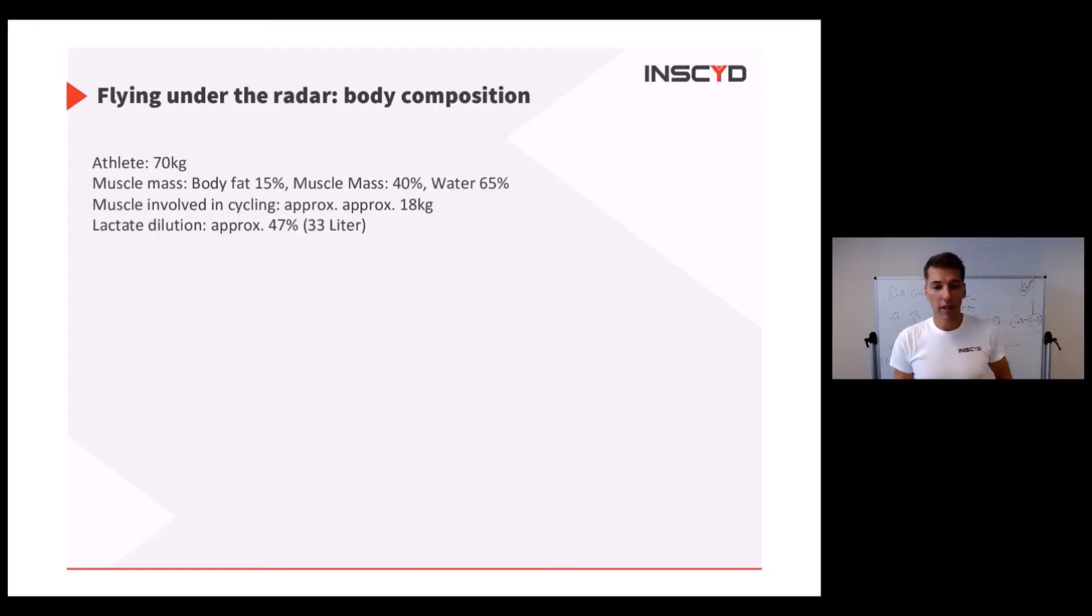My example is a cyclist, or maybe it's a triathlete, but the exercise he's doing is cycling. And because of the muscle mass involved, and obviously he's not using all the muscles in the body, he's using 18 kilograms of muscle. And because of the fixed 65% water according to the literature, he has approximately 33 liters of water that lactate dilutes in.